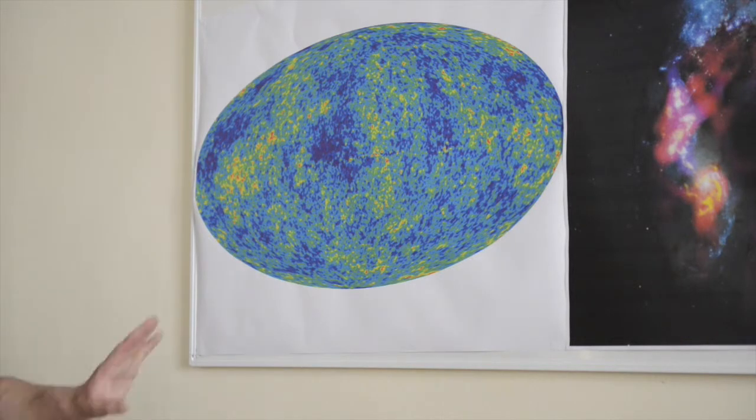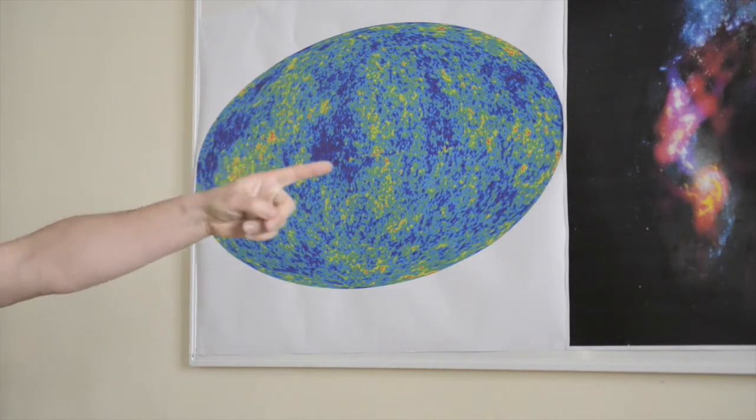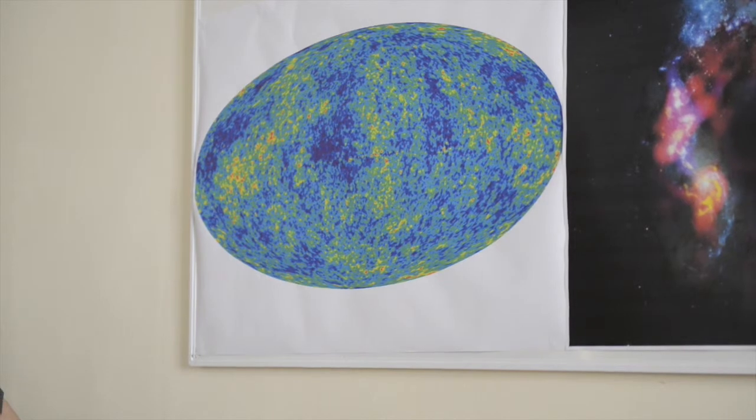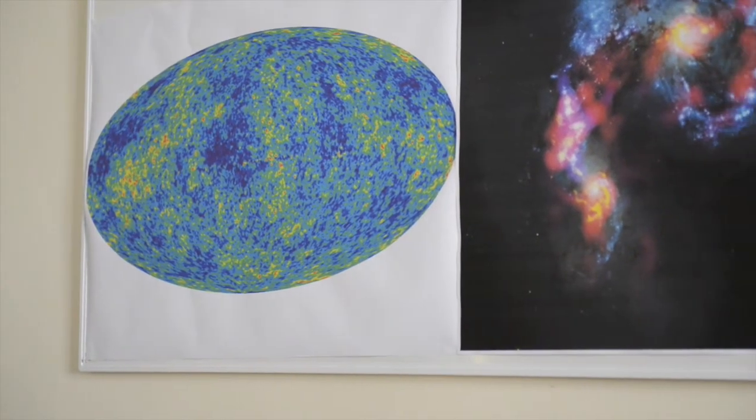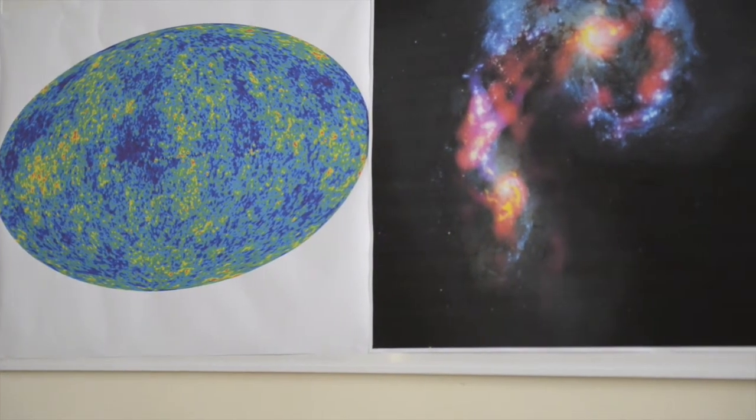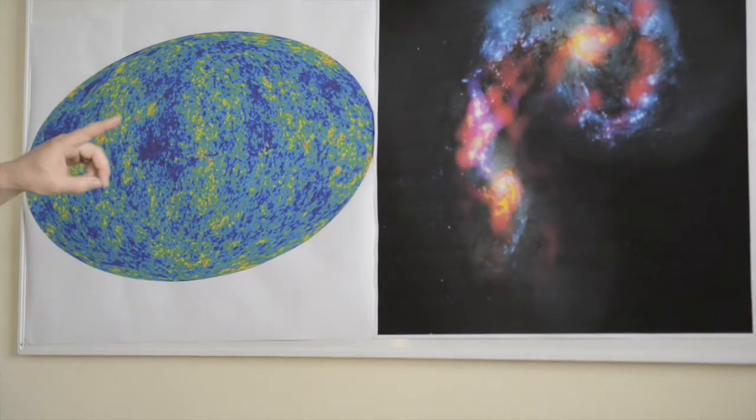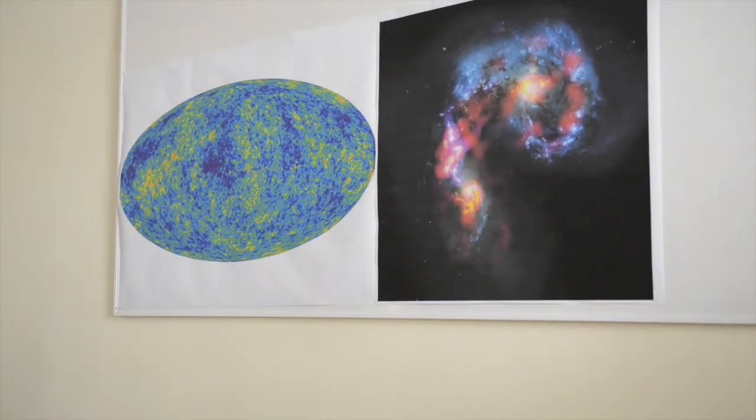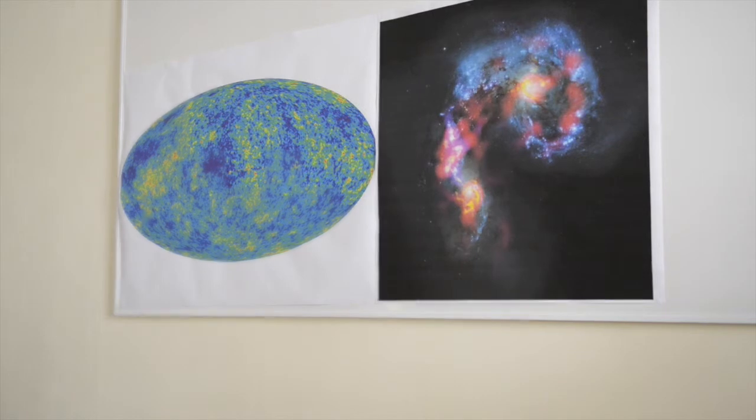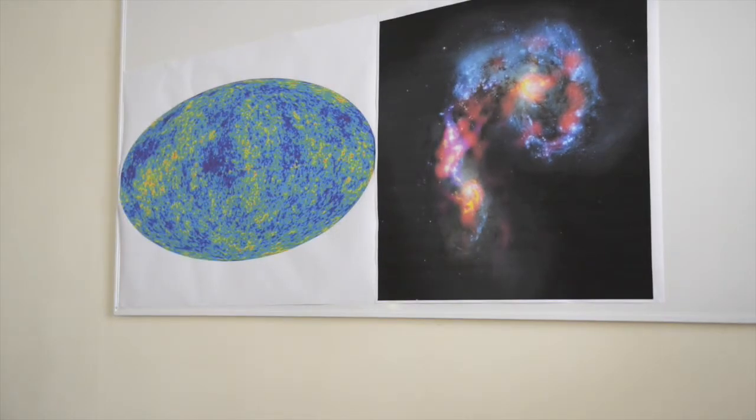So galaxies and clusters of galaxies that we see today in our present Universe were created out of these overdensities. And we can compare this map to this image on the right. It shows a very small portion of the current Universe. In fact, it shows two galaxies that entered into a collision and are in the process of merging.